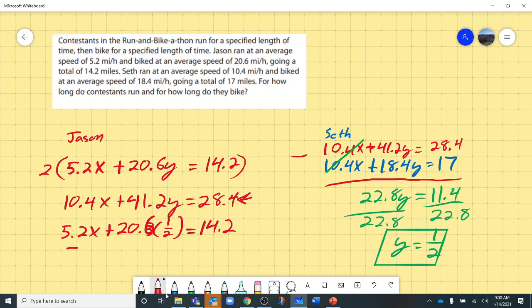I'm going to do some math now. 5.2x plus 20.6 times one-half gives me 10.3 equals 14.2. I'm going to subtract 10.3 from both sides.